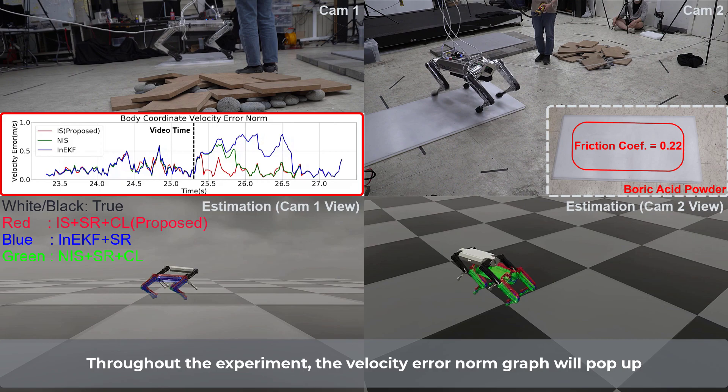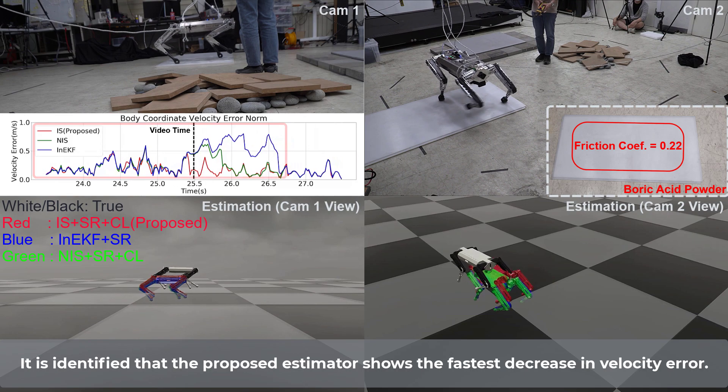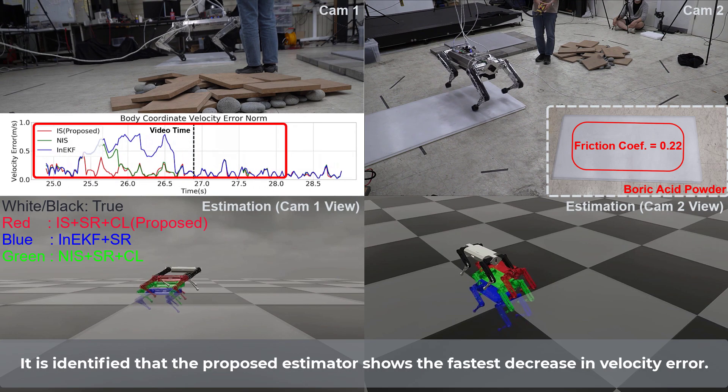Throughout the experiment, the velocity error norm graph will pop up when the proposed estimator and the others become significantly different. It is identified that the proposed estimator shows the fastest decrease in velocity error.